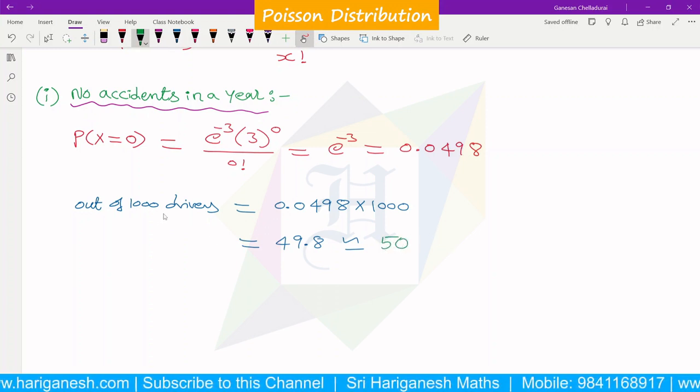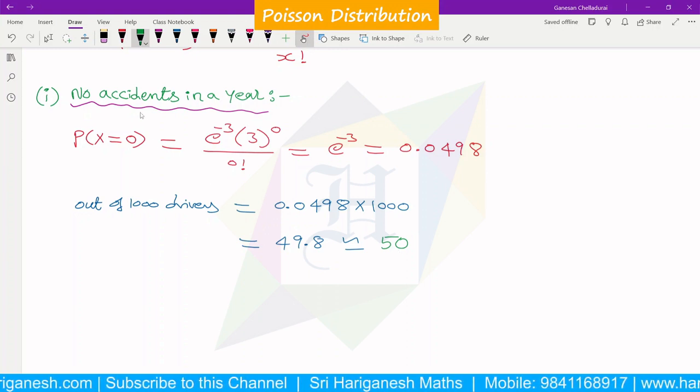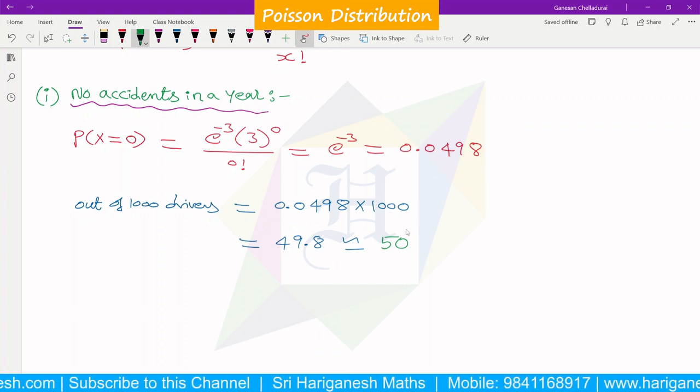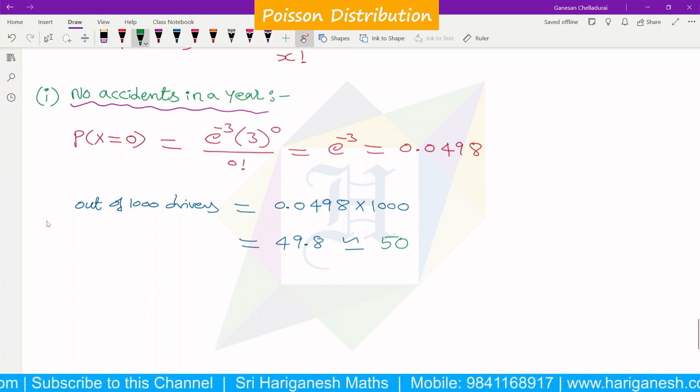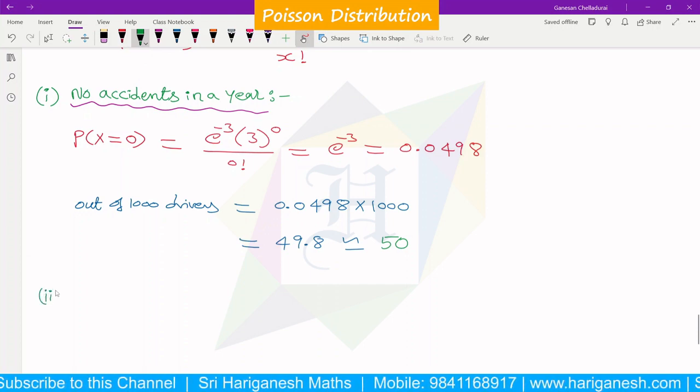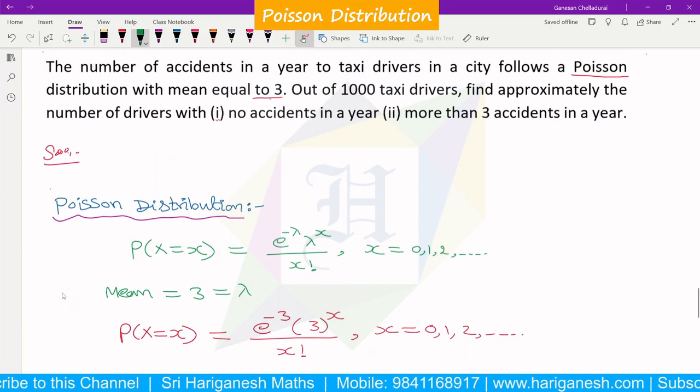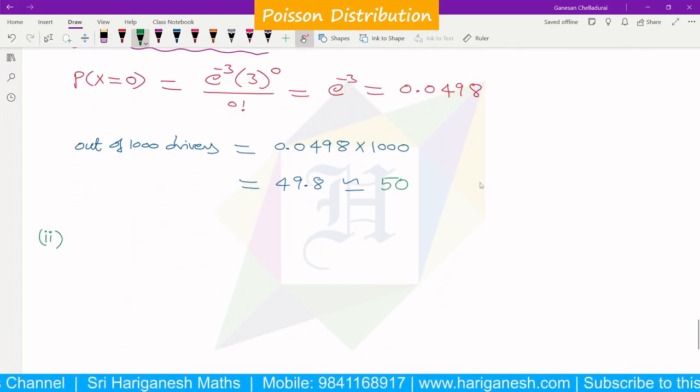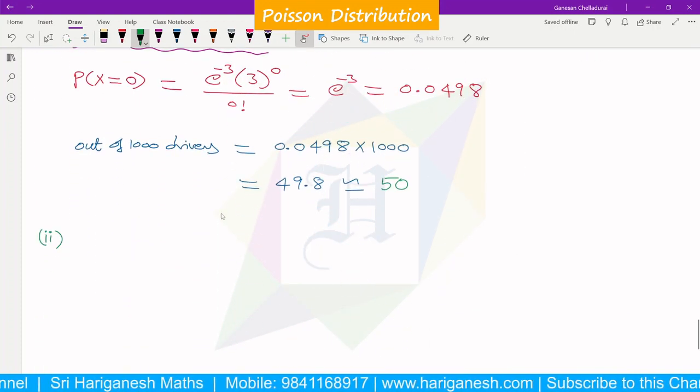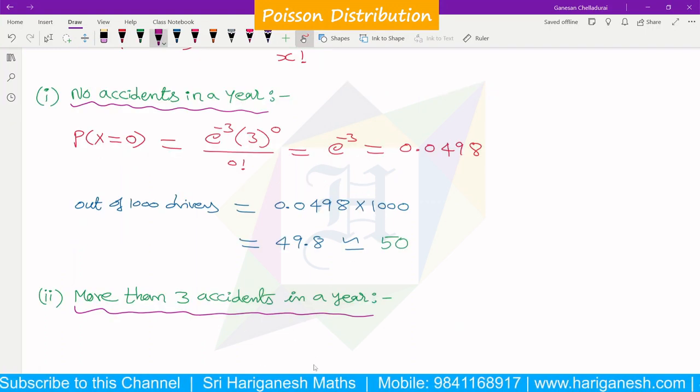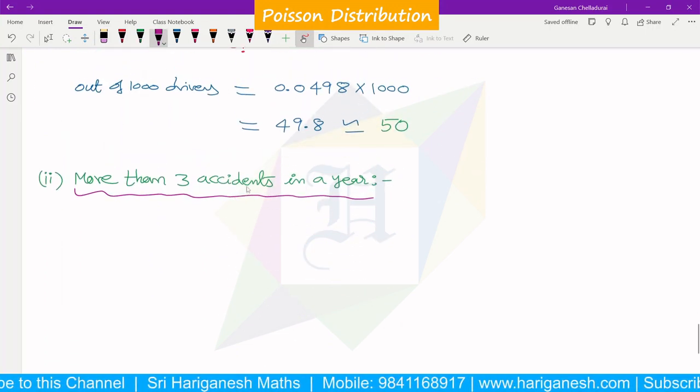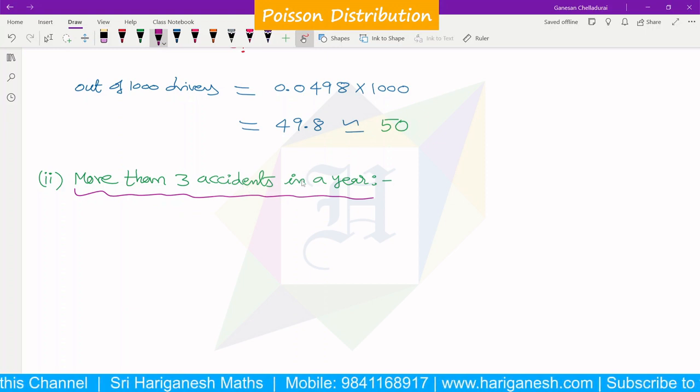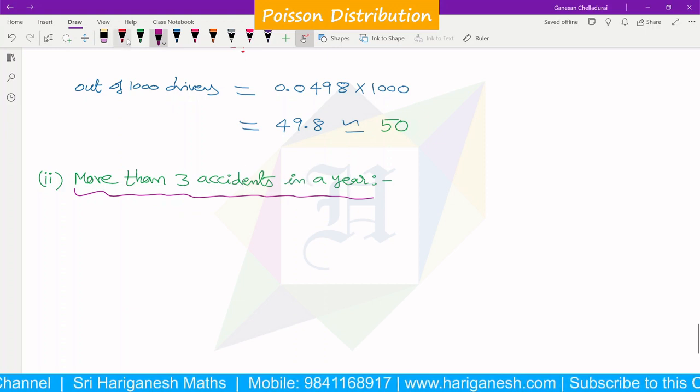So there are no accidents for that driver. The second question is, more than 3 accidents. Out of 1000, more than 3 accidents. Now, more than 3 accidents in a year - how many drivers have more than 3 accidents in a year?